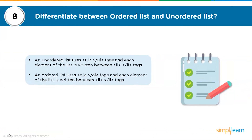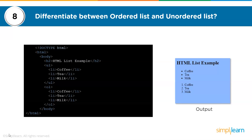The eighth question: differentiate between ordered list and unordered list. An unordered list uses ul tags and each element is written between li tags — items are displayed as bullets rather than numbers. For an ordered list, you use ol tags with each element inside li tags, and list items are displayed using numbers rather than bullet points. On screen, the first set shows an unordered list with bullet points, and the second set — coffee, tea, and milk — is an ordered list represented using numbers.